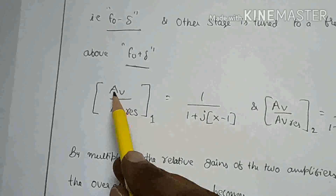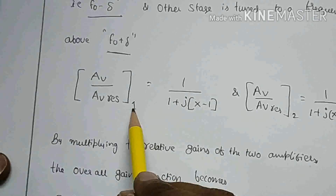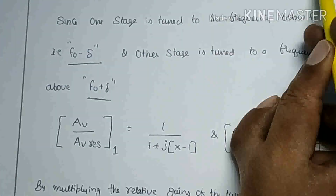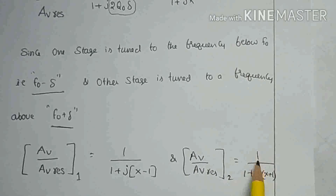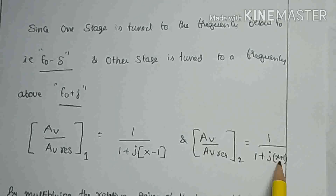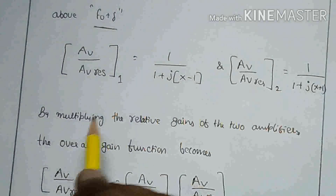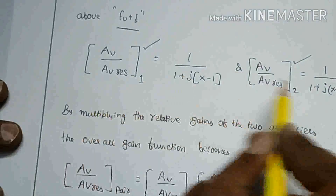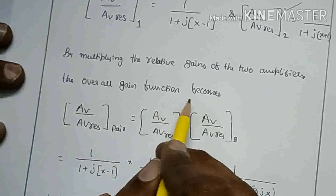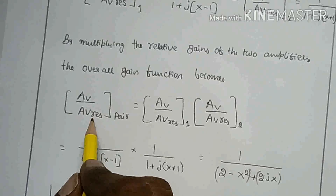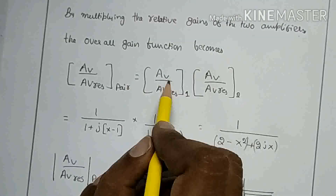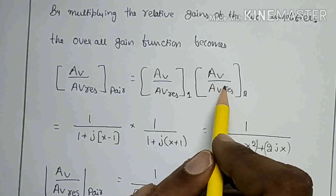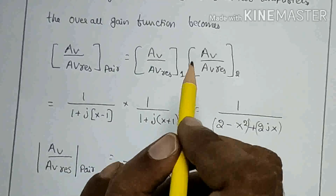We calculate AV/AV-resonance for the first stage as 1 over (1 + j(x − 1)), where x = 2·Q₀·δ, and for the second stage it is 1 over (1 + j(x + 1)). By multiplying the relative gains of the two amplifiers — the first stage and the second stage — the overall gain function becomes AV/AV-resonance of the pair, equal to the product of the first stage gain and the second stage gain.